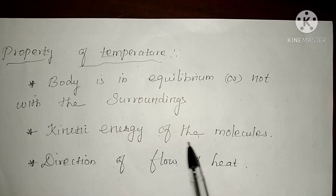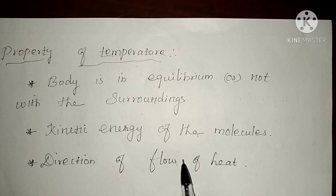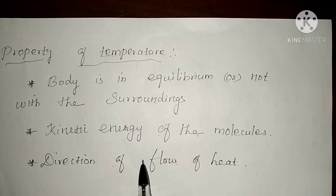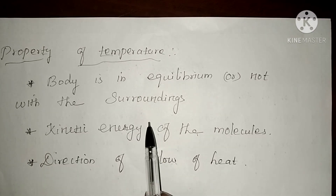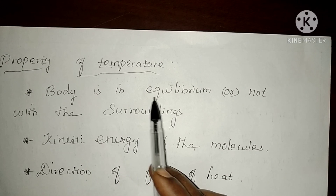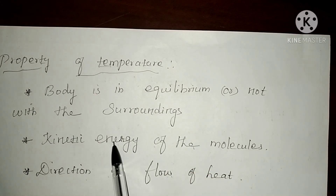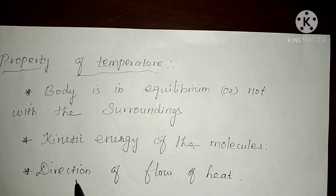Temperature also tells the direction of the flow of heat. Based on temperature, we can say from which object to which object the heat is transferred. Heat always transfers from the hot object to the cold object. So temperature defines the direction of the flow of heat. These are the three properties of temperature: equilibrium, kinetic energy of molecules, and direction of heat flow.